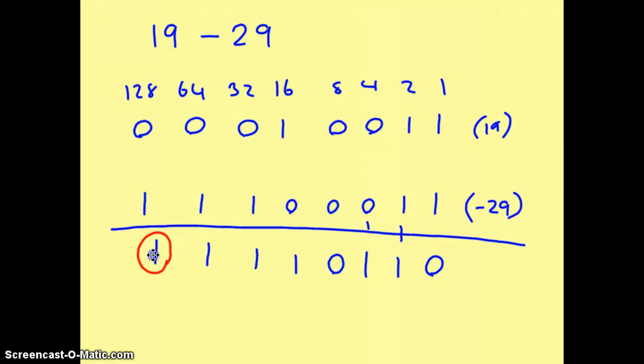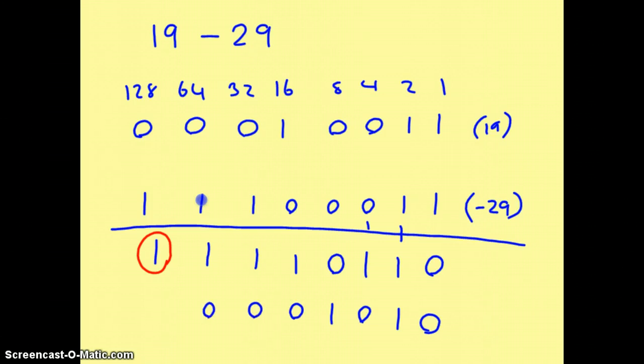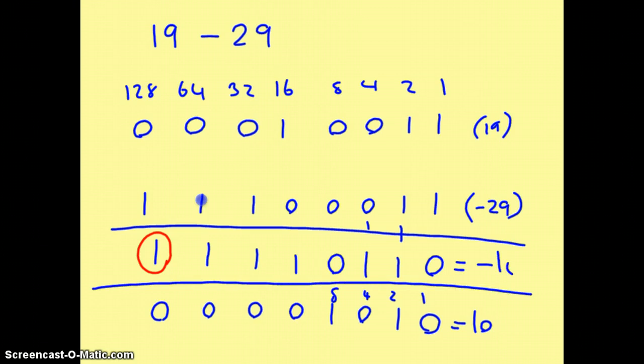Well the easiest way is to apply two's complement to the answer. We can apply two's complement because we know it's a negative number. Up to and including the first one, leave as is, swap the rest around. 1, 2, 4, 8. So this gives us 10, which means the answer is minus 10.